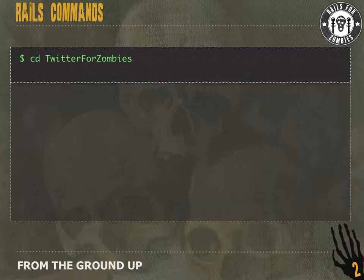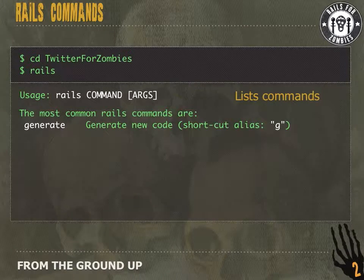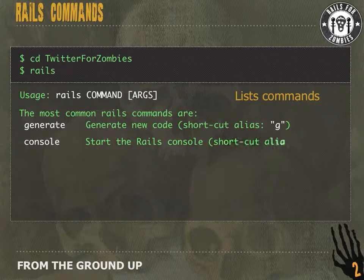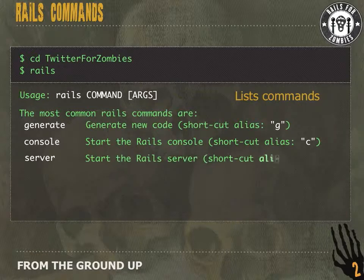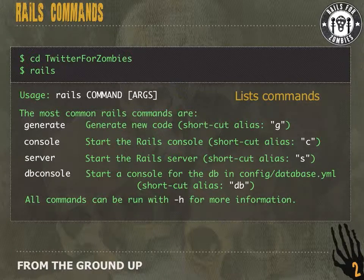Now we've created our Rails app, let's jump into the directory by running `cd`. If we run Rails from inside the directory, we're given a list of commands we can run on a Rails app: the generate command to generate new code, the console command to debug, the server command to start our local development server, and the dbconsole command to jump into a console for our database. If we want more information about any of these commands, we can run them with the `-h` option.